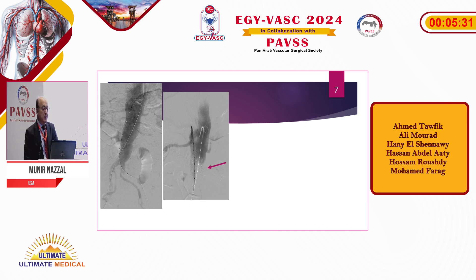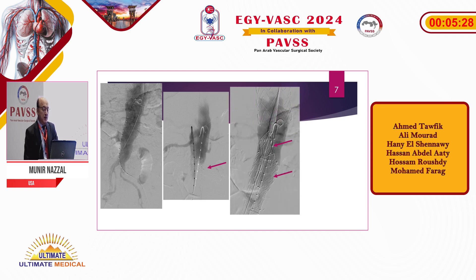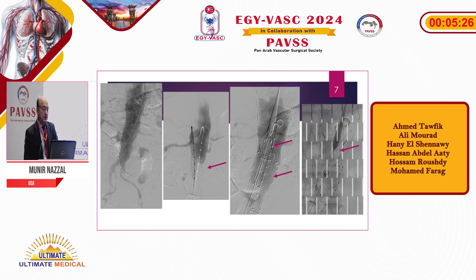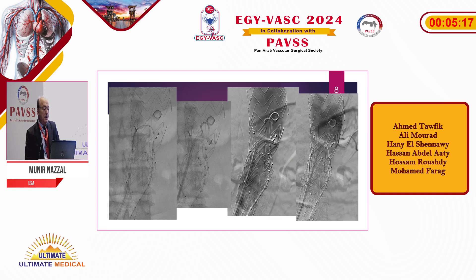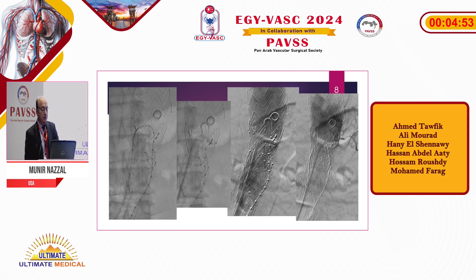We introduced the thoracic part — you can see it here — and then all of a sudden the thoracic part jumped and covered both renal arteries. We tried every way to get into the renal arteries. We finally managed, using the Aptas, to go into the left renal artery as you can see here, but the right renal artery was fully covered — we could not do much for it. We did left renal stenting, and there was a long discussion about whether we should leave the right kidney covered or try to open it.